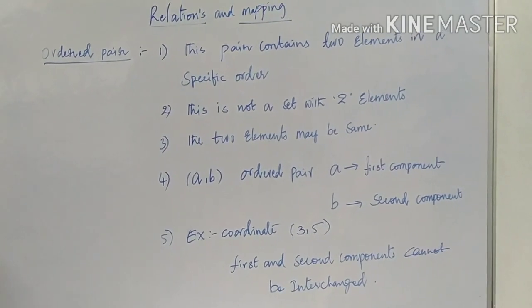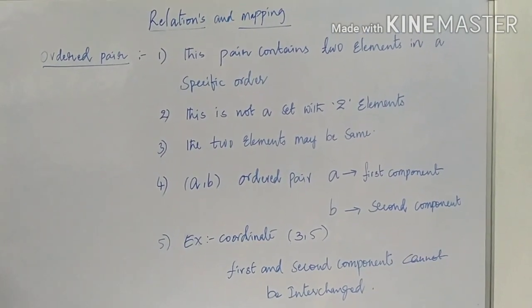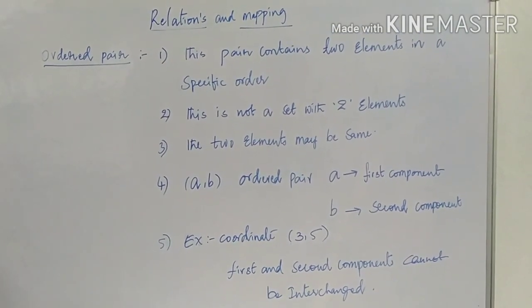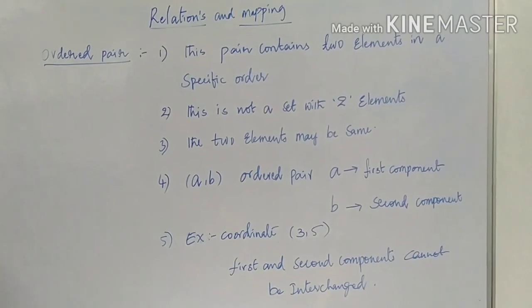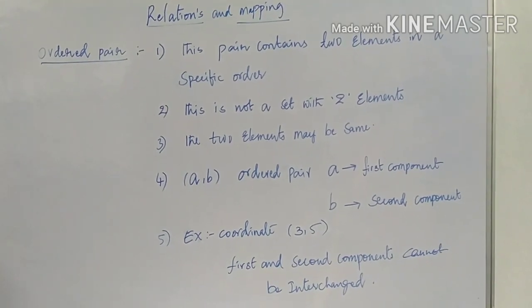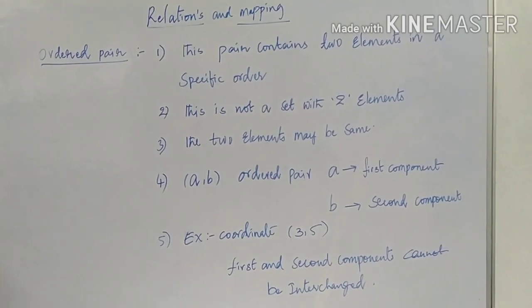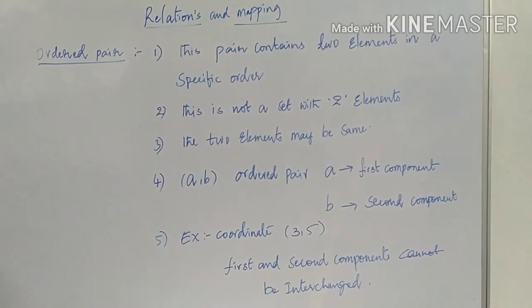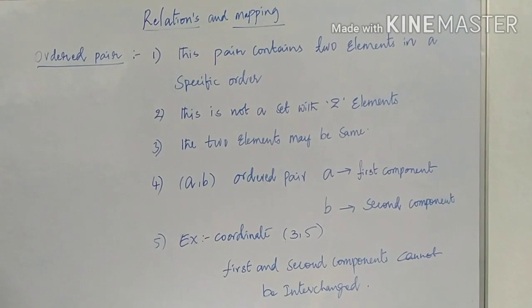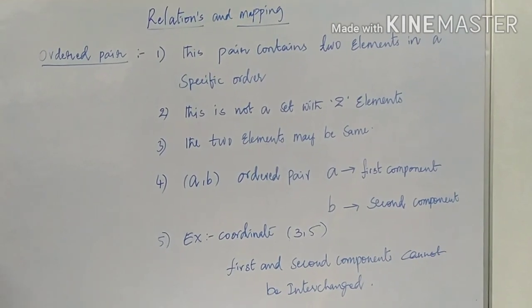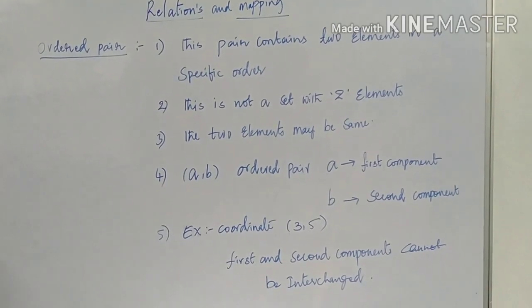And what is mapping? A and B are two non-empty sets. A relation F from set A to set B is said to be a function or mapping.